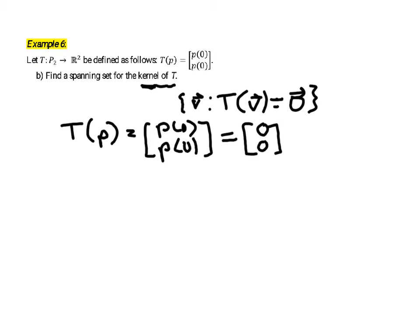So the real condition on a polynomial p being in the kernel of this transformation is that p(0) is equal to 0. Now remember, the polynomial p belongs to P₂, so that's the collection of polynomials with degree 2 or less. So any polynomial in that set...